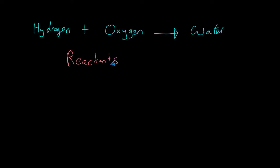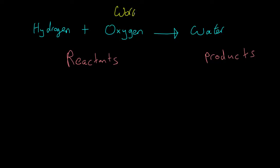Reactants makes sense because they're reacting together to form our products. So we produce the products by reacting the reactants. Sometimes they might ask you to name the reactants and you'll be looking at the left hand side of your equation — in this case hydrogen and oxygen.